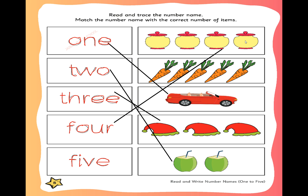Next, move on to next one. What is the number given? Number 3. How many flowers we have to draw, children? 3 flowers. Draw one by one. 1, 2, 3. How many flowers should we draw? 3 flowers. Then the number name for this number: T-H-R-E-E. 3. T-H-R-E-E. 3.